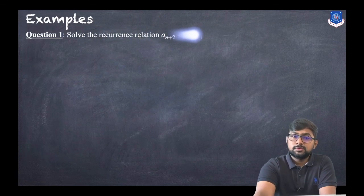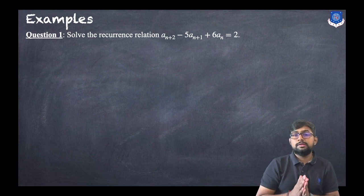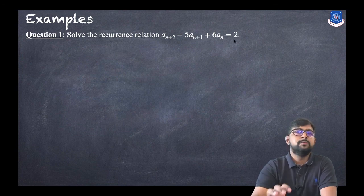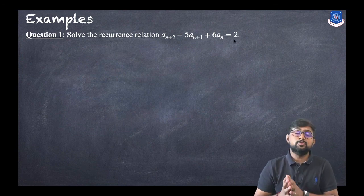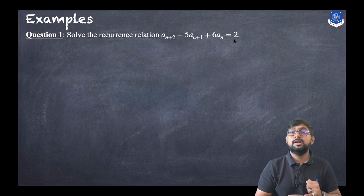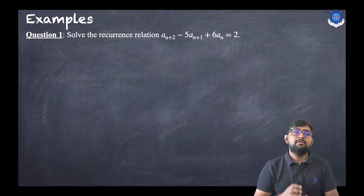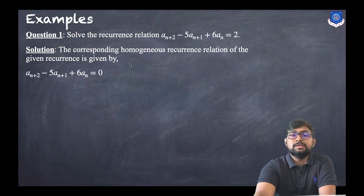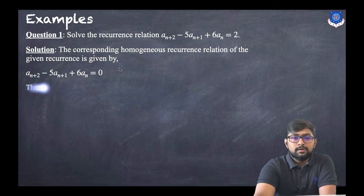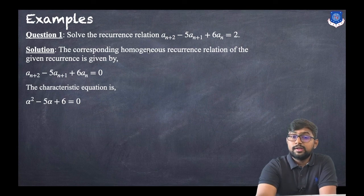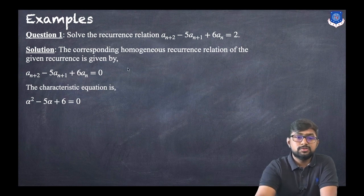Let us discuss examples. The first question is: solve the recurrence relation a(n+2) − 5·a(n+1) + 6·a(n) = 2. The right-hand side equals 2, so it is not a homogeneous equation. We need to find both the homogeneous solution and a particular solution and then add them. The characteristic equation will be α² − 5α + 6 = 0, since the order is 2.